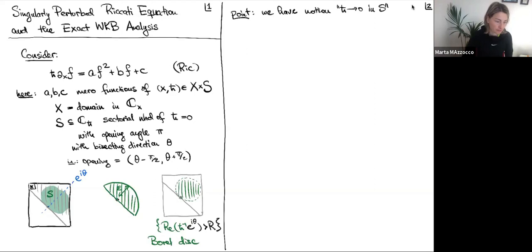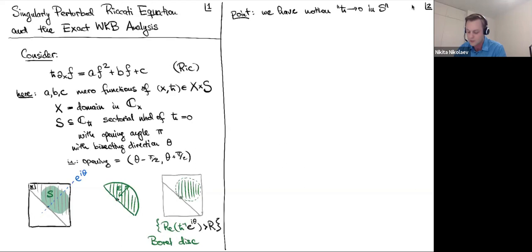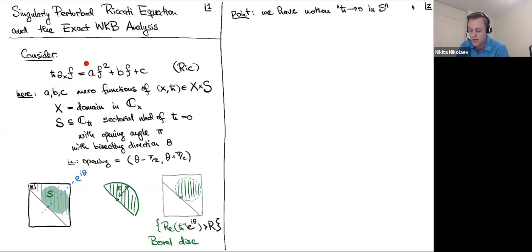The important thing about focusing on h-bar going to zero is that if you look at the Riccati equation, as h-bar goes to zero the differentiation is scaled by h-bar, so if I literally set h-bar equal to zero my Riccati equation degenerates from a differential equation to an algebraic equation. So I started with a problem of solving a differential equation and I've degenerated it to a problem of a completely different manner — an algebraic equation.